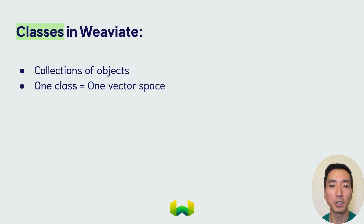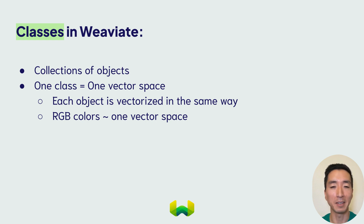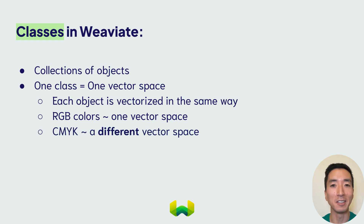It's really important to note that each class constitutes one vector space, meaning that each object in the same class is converted to a vector in the same way. Going back to our colour analogy, a collection of RGB colours would constitute one vector space, as each of them would be represented by the same system of three numbers representing red, green, or blue. Now if you had another set of CMYK colours, that would be a distinct vector space, as not only are there four numbers, but also each number means something different to the RGB numbers.